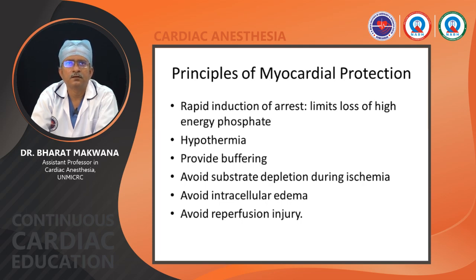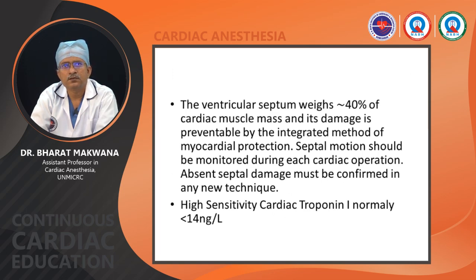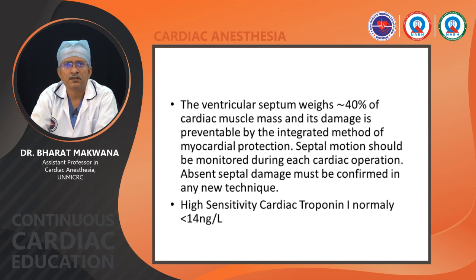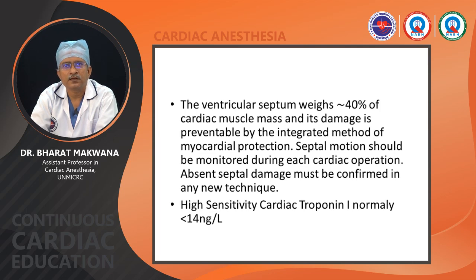An important consideration during CPB is that the interventricular septum weighs approximately 40% of cardiac mass. If it is damaged, it leads to septal wall motion abnormality and dysfunction of both LV and RV. Therefore, septal wall motion abnormality must be assessed every time when coming off CPB. Troponin can also be measured to quantify the degree of myocardial injury that occurred during CPB.